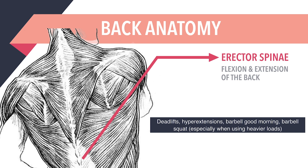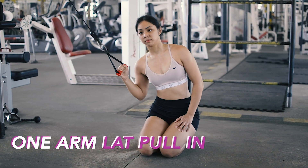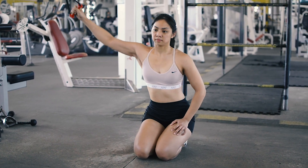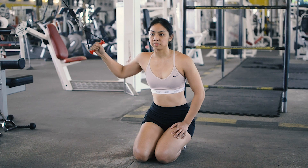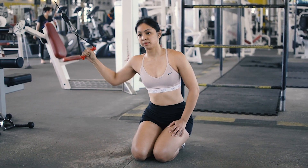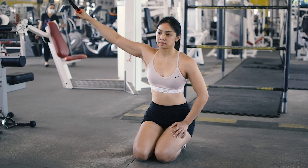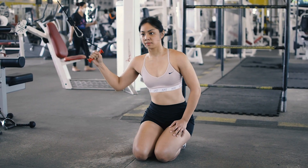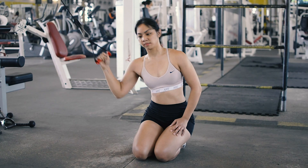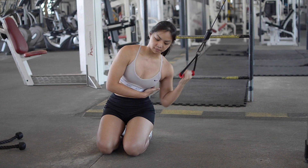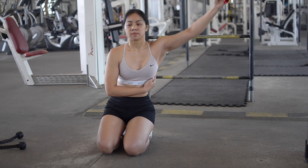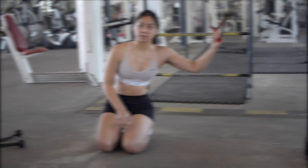Now that we've covered the anatomy of the back, we can jump right into the exercises. Here we have the one-arm lat pull-in, which is a lat pre-activation exercise. I really like this as it helps me to feel my lats better in the main workout. Use a light weight and pull in a straight line. It's helpful to crunch laterally or lean into the direction of pull. If needed, you can keep your hand on the lats area to ensure that the appropriate muscle group is being recruited.